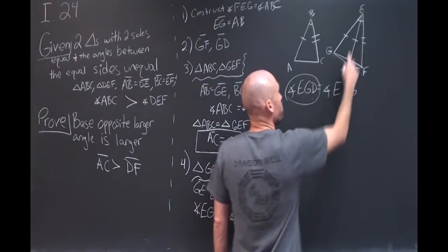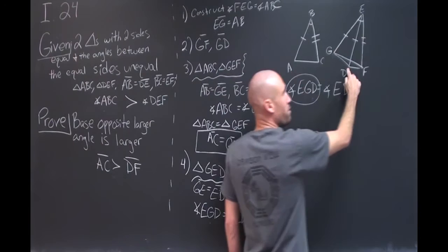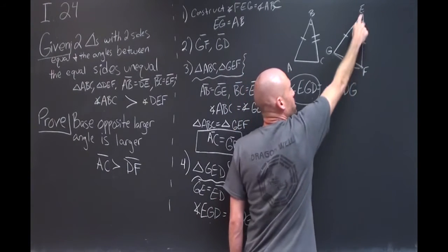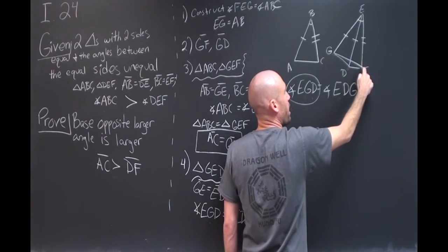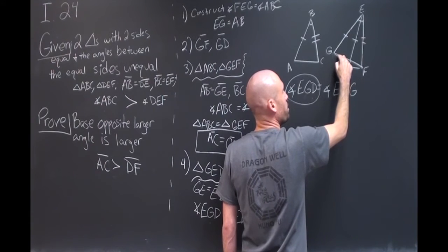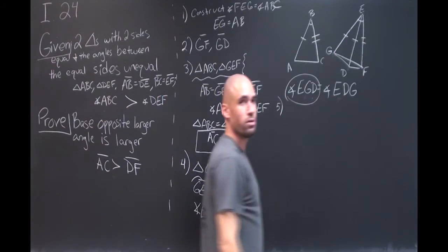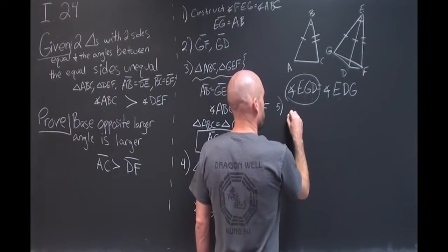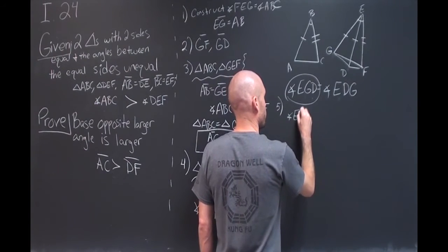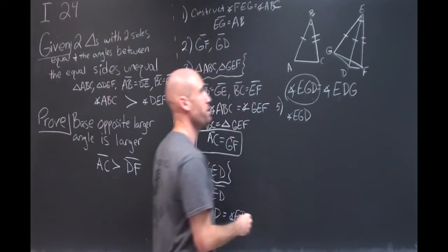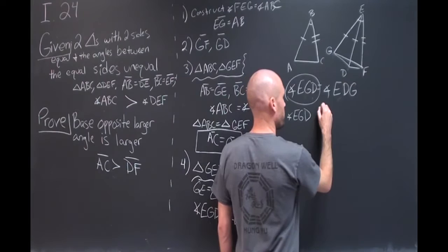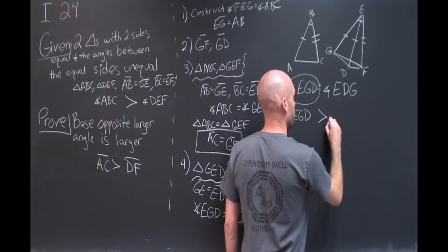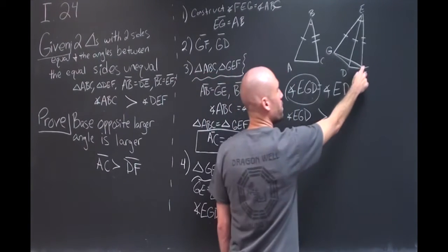So the first one we'll do is EGD. You notice in EGD we have the angle FGD. This one here is smaller than the whole angle. So you can say angle EGD is greater than angle FGD.